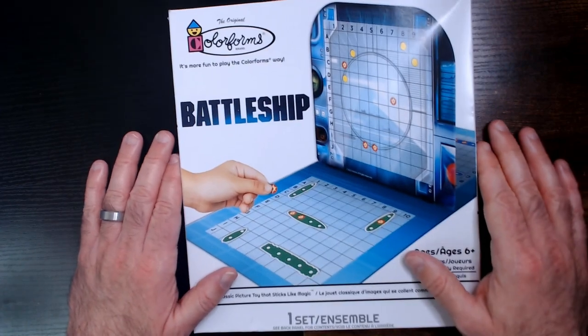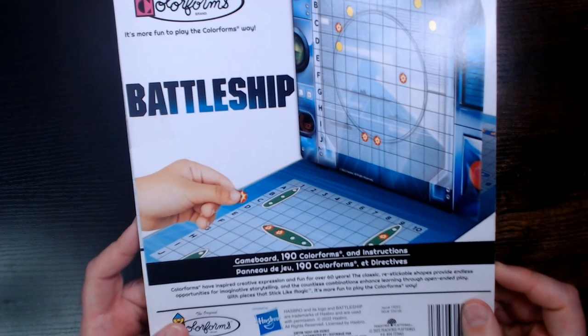Welcome back to Bilar. We have a Colorforms Battleship. Got this at the Dollar Tree. So it's just Battleship in Colorform mode.